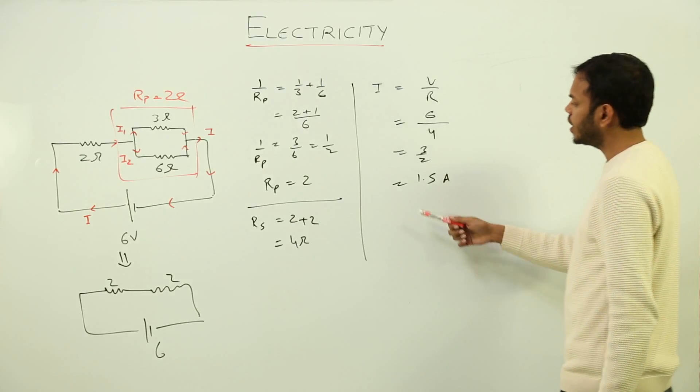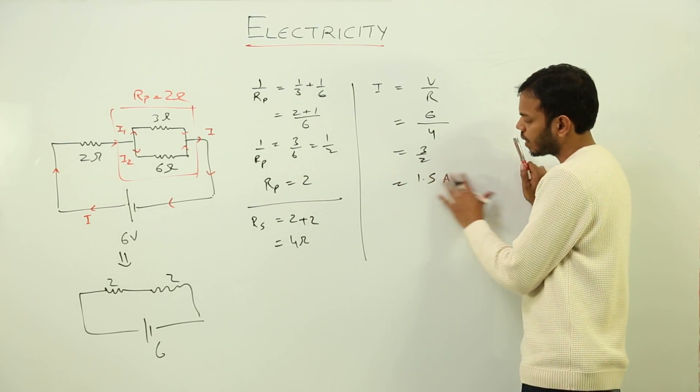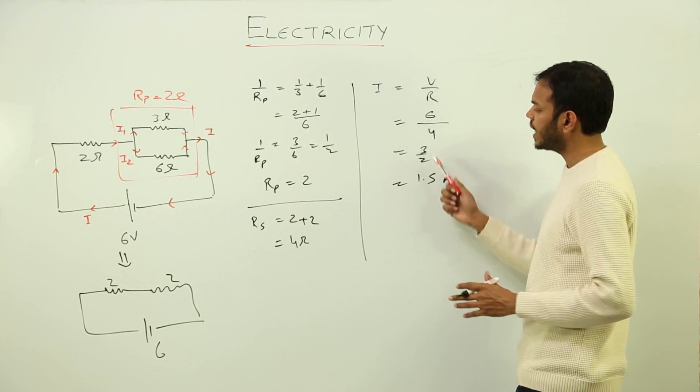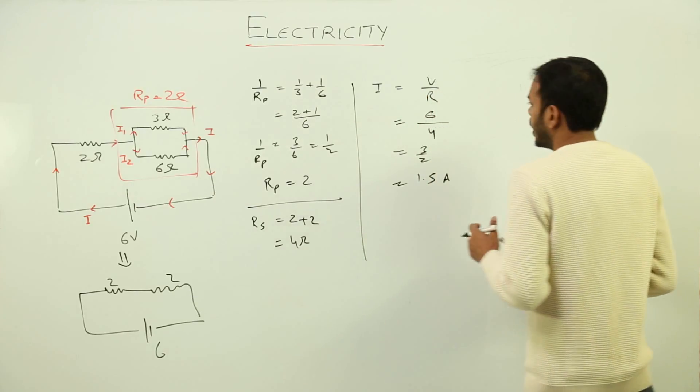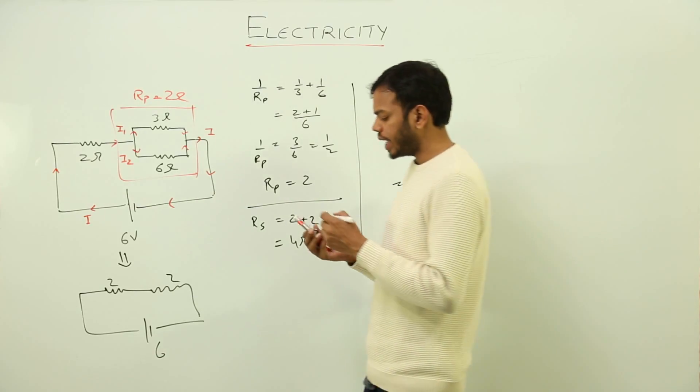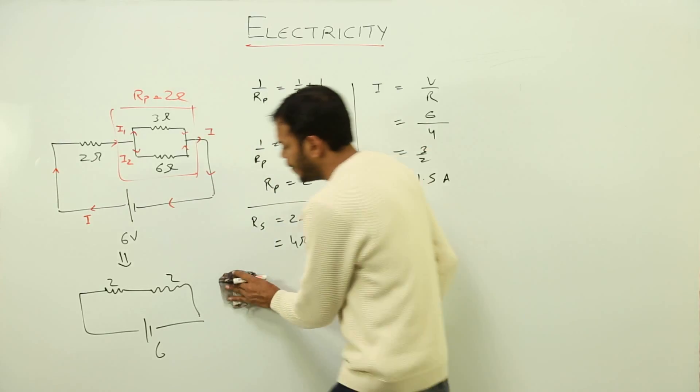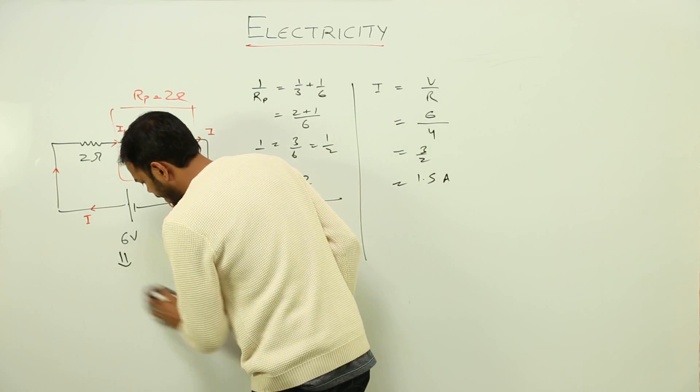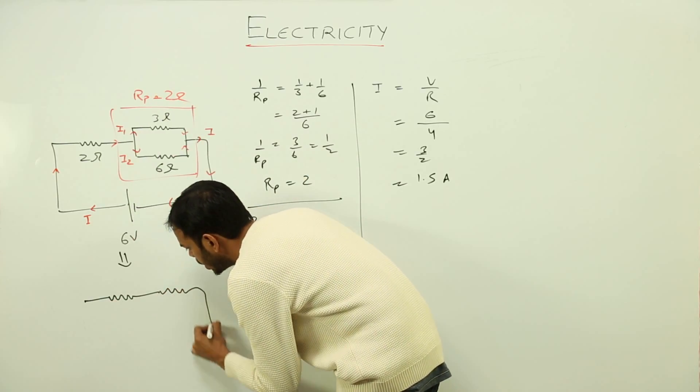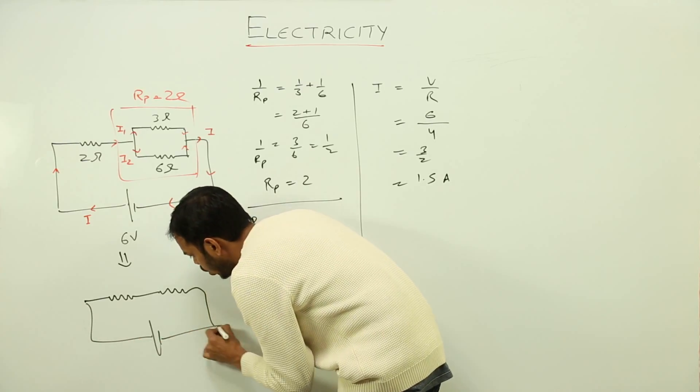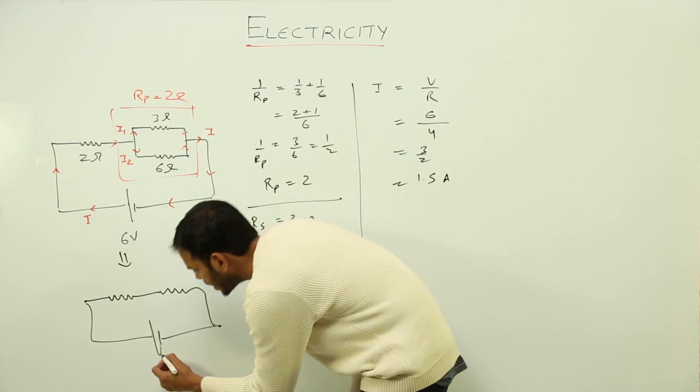We can solve further using this value or that value. Anyways, I will try to neglect the decimal thing. I am going to use 3 by 2 only; it just eases the calculation. Now see what actually is happening. I'll tell you, when I redraw the circuit, it is easier to explain the distribution of voltage in the circuit.